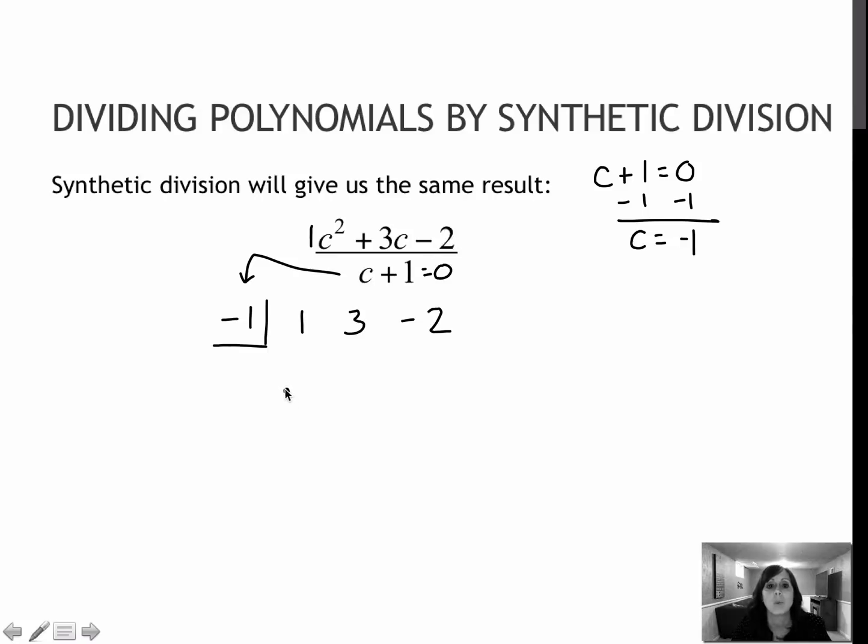I'm going to leave one line of space. And then my last term, I'm going to also put a box. When I do synthetic division, anything above the line I'm going to add, and anything below the line I'm going to multiply by this negative 1. So here's how it works.